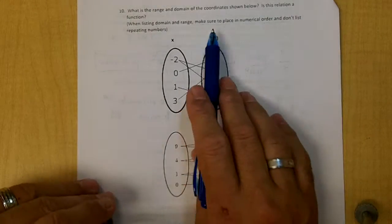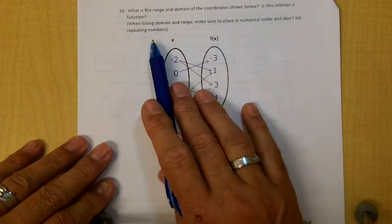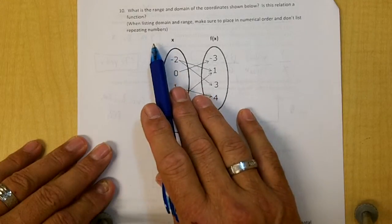Number 10. What is the range and domain of the coordinates shown below? Is this relation a function?